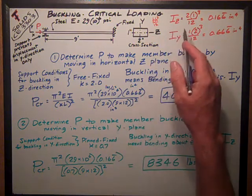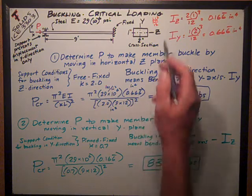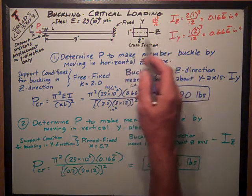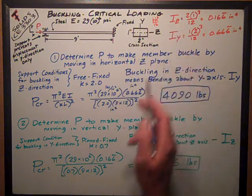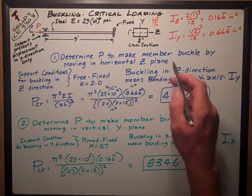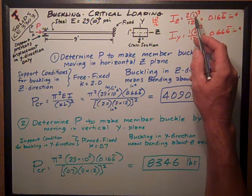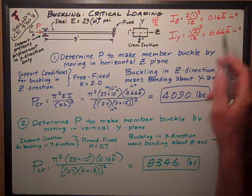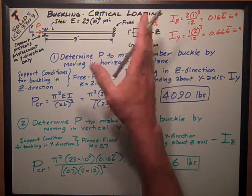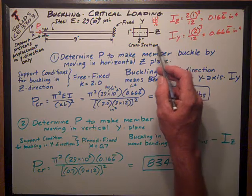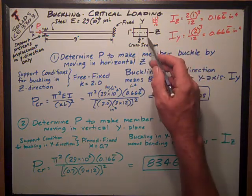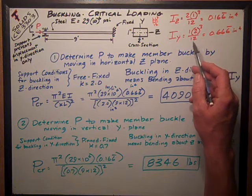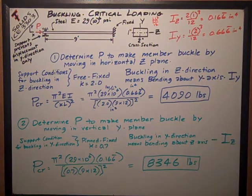Remembering that for a rectangle IZ, it's BH³/12. So in the Z direction for bending about the Z axis, which is what IZ is referring to, it's base times height one cubed divided by 12, it's 0.166 repeating inches to the fourth. For bending about the Y axis, just turn it on its side, and this is B and this is H, so it's one times two cubed over 12, which is 0.666 inches to the fourth.